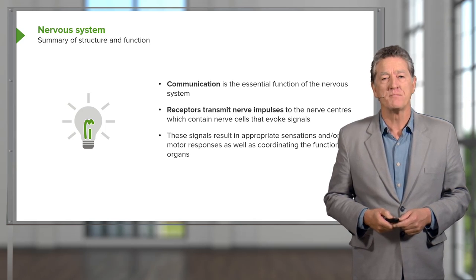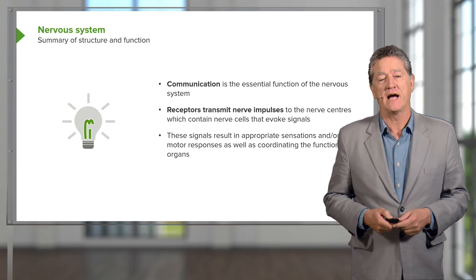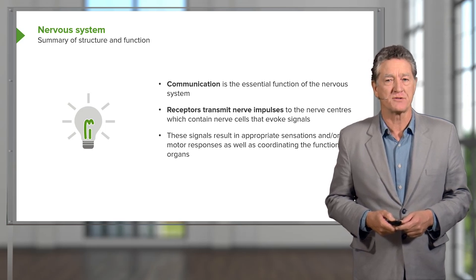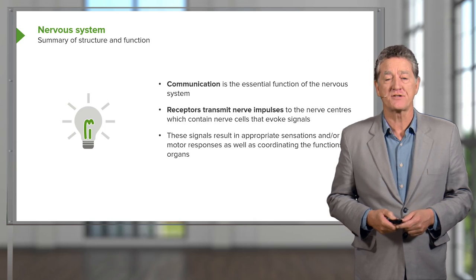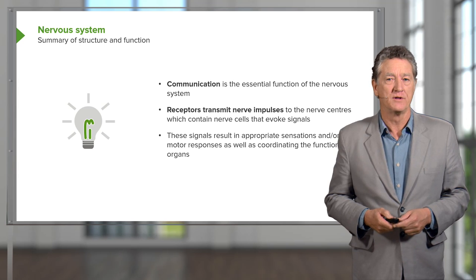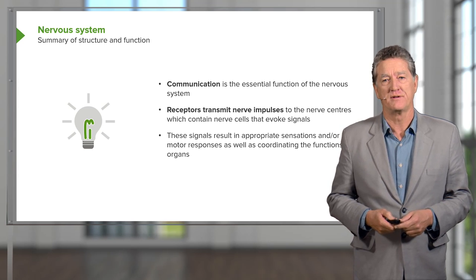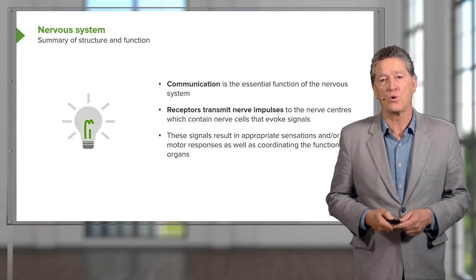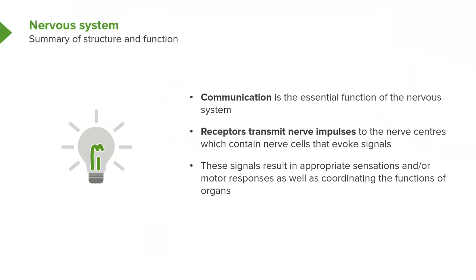We have motor neurons that send information to our skeletal muscles and our smooth muscles to allow us to move as individuals, and for some of our internal organs to change in dimension and therefore alter their function. All these important occurrences happen as a result of the neurons in the nervous system.